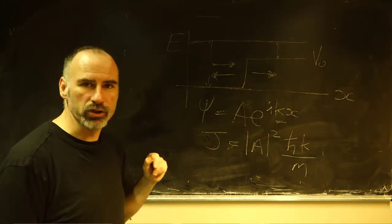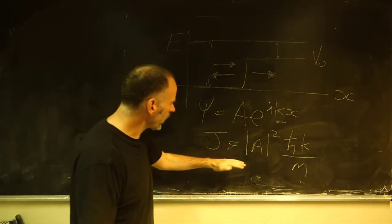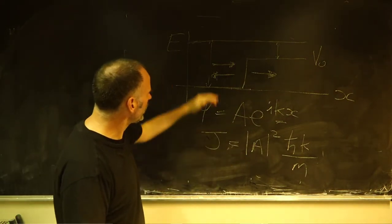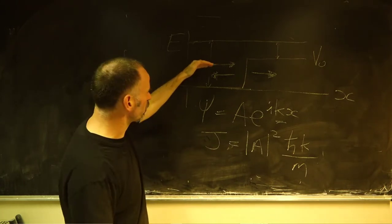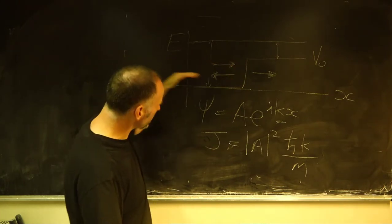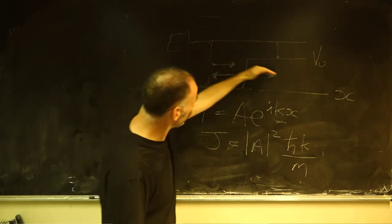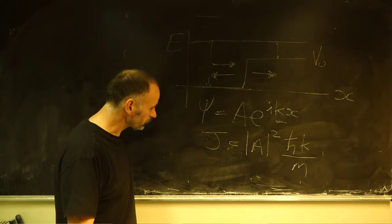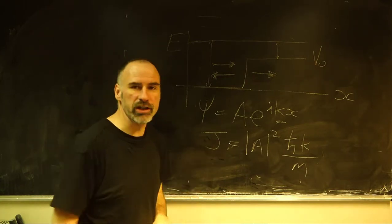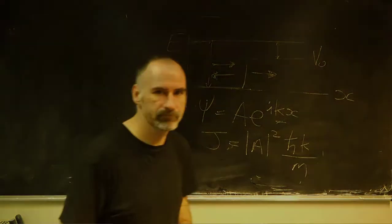Remember that our flux j is given by the number of particles per unit length multiplied by the velocity, which is ℏk/m. That's our flux. What we want to do is look at, for each of these beams — the incoming beam, the outgoing beam, and the transmitted beam — the flux in each case.